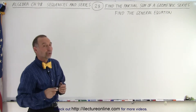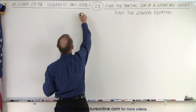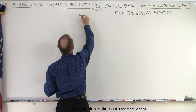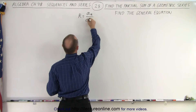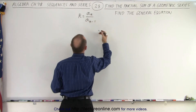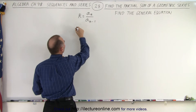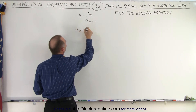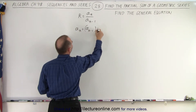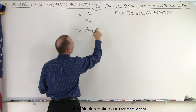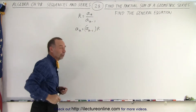Let's start with the following. We know that there's a common ratio. The common ratio R is equal to a sub n divided by a sub n minus 1, which means to get the next term, a sub n is equal to a sub n minus 1 multiplied times R. So you multiply the common ratio by the previous number to get the next number.